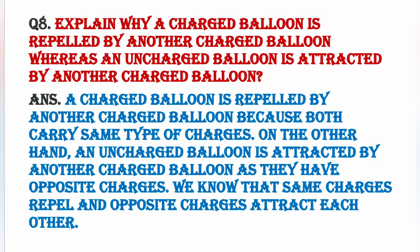Next question: Explain why a charged balloon is repelled by another charged balloon, whereas an uncharged balloon is attracted by another charged balloon. एक charged balloon दूसरे charged balloon को repel इसलिए करता है क्योंकि दोनों में same charges होते हैं। लेकिन जब एक balloon uncharged है और दूसरा charged है, तो दोनों opposite charges carry करते हैं और एक दूसरे को attract करते हैं — same charges repel और opposite charges always attract each other.